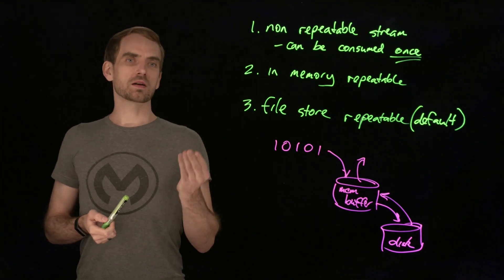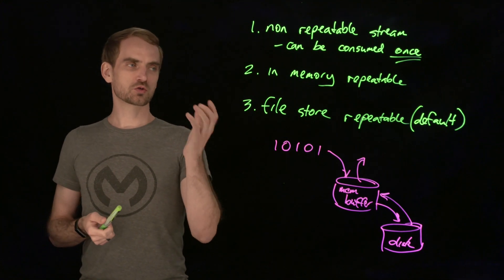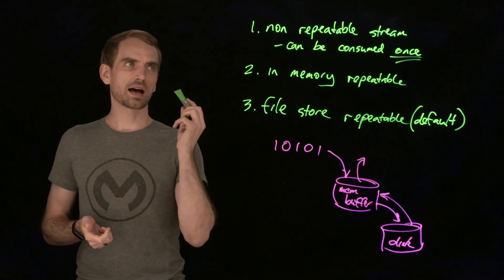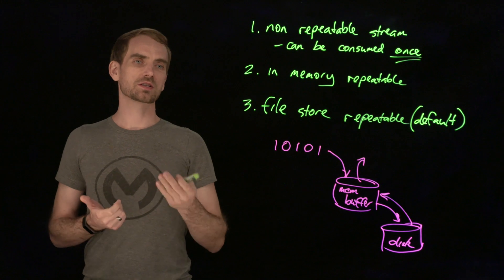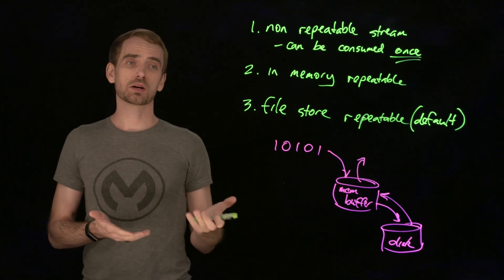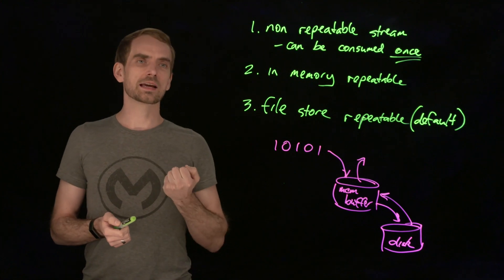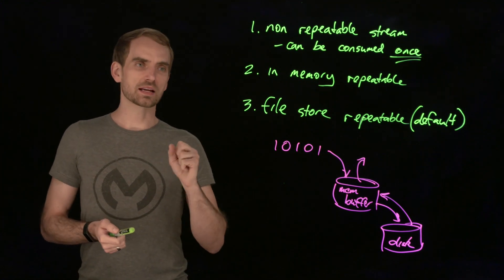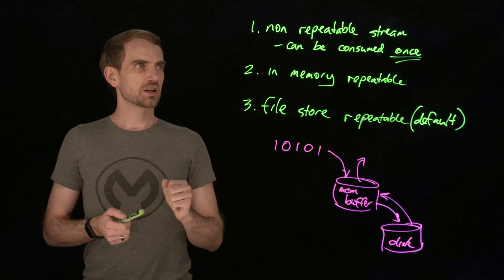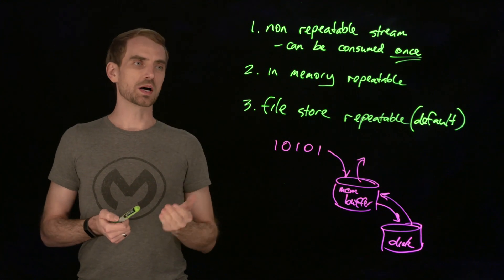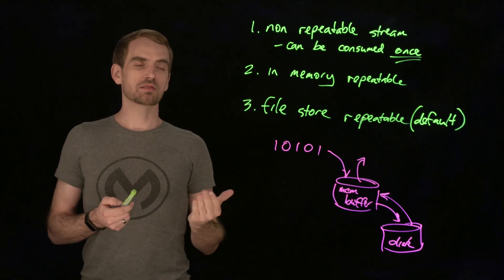So there are three main options for streams in Mule. There are non-repeatable streams which behave very similarly to streams in Java. When you are reading the bytes in, or reading whatever's in there, and then once you've read it, it gets closed and it is done. So they can only be consumed once, which is both their strength and their weakness.